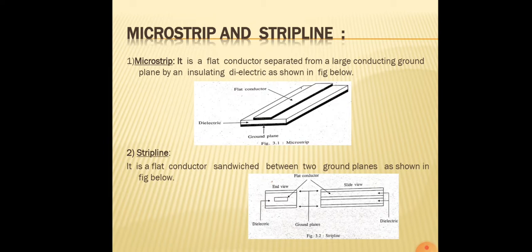The microstrip consists of a flat conductor separated by a dielectric, below which there is a ground plane. So the ground plane is at the bottom, above that the dielectric, and on top of that a flat conductor. The length of the microstrip is quarter wavelength or half wavelength. At microwave frequency, the wavelength is of the order of a few centimeters. The ground plane is the circuit common.